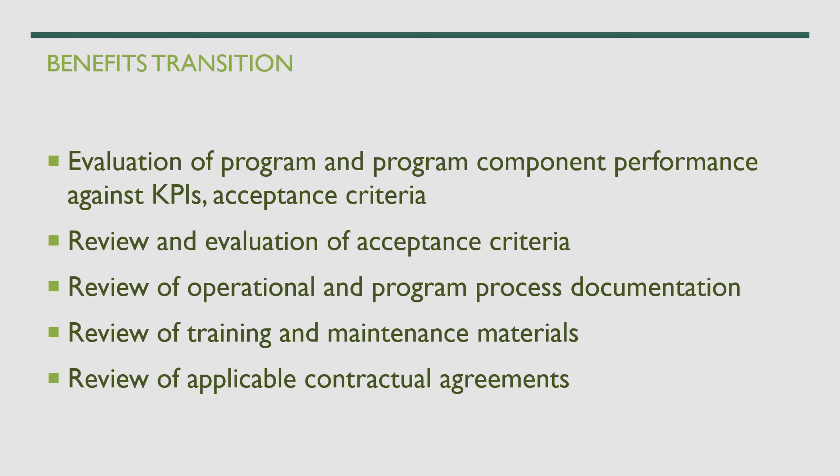Another set of activities involves evaluation of program and program component performance against KPIs and sustainment criteria. Before transitioning to operations, you provide them the KPIs, current performance levels, acceptance criteria, and what needs to be done to sustain it. You also review and evaluate the acceptance criteria, including any required changes, review of operational and program process documentation, review of training and maintenance materials, and review of applicable contractual agreements.